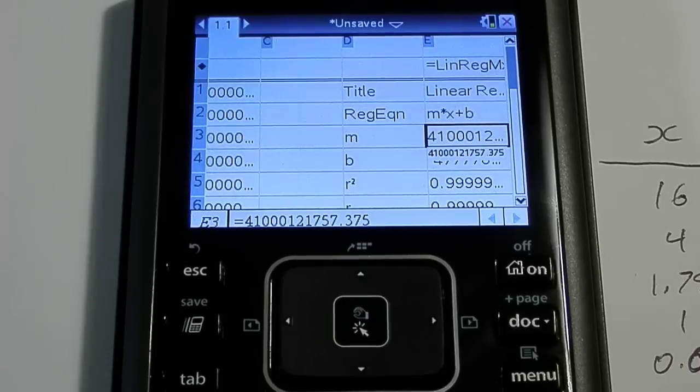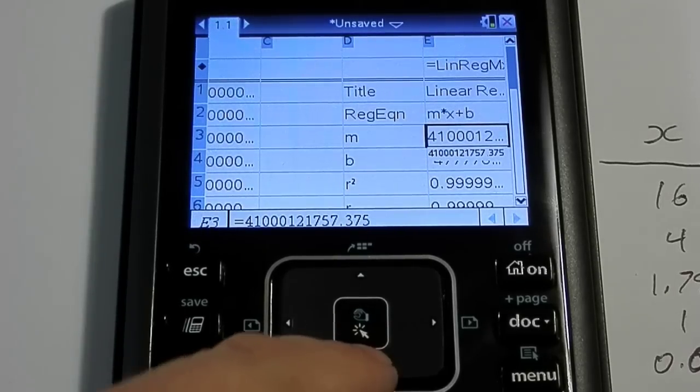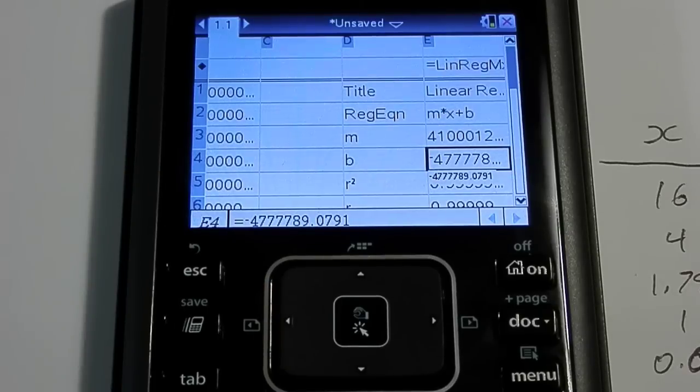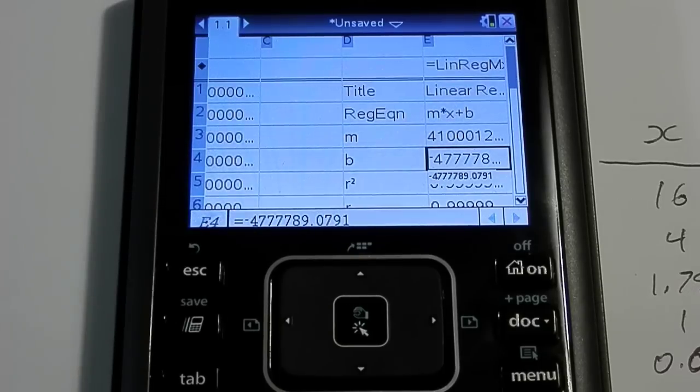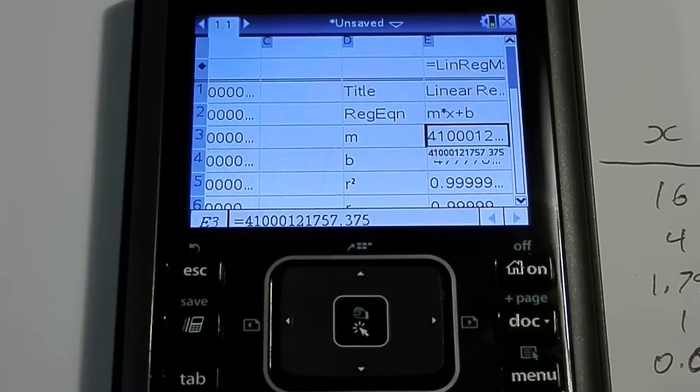Just scroll down onto it by using the arrow pads, and you can see that then it expands the number to show me that this is 4100121757.375. And for the y-intercept, it is negative 4777, I think that's what it says, 89.0791. So, I might have to go on top of those to see them like that, but it's not really a big deal. You can also see that the number does appear there a little bit bigger for me as well. So, you can read it wherever you need to, to be able to get those values.